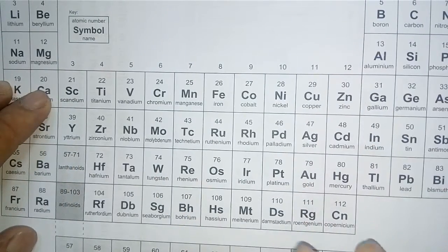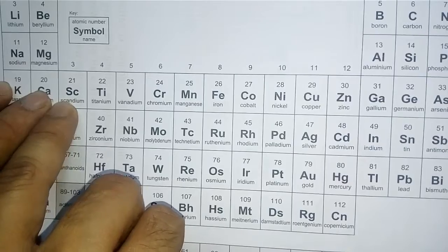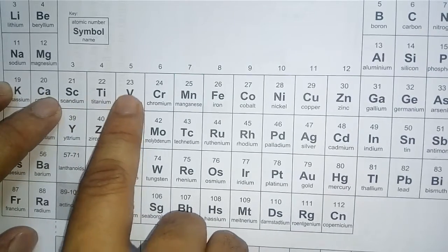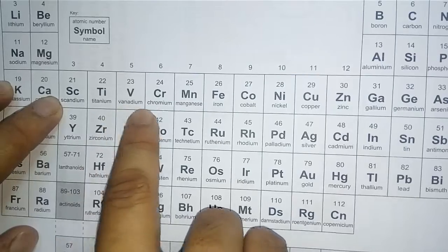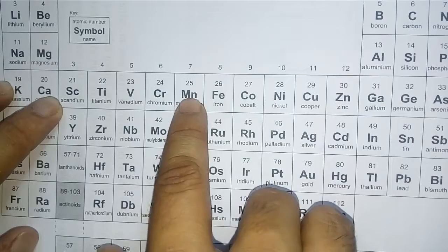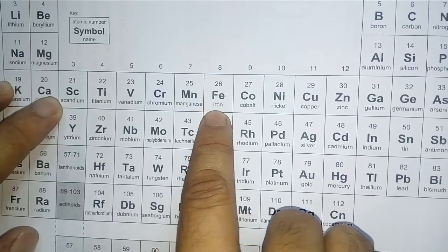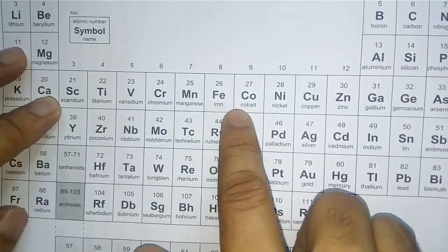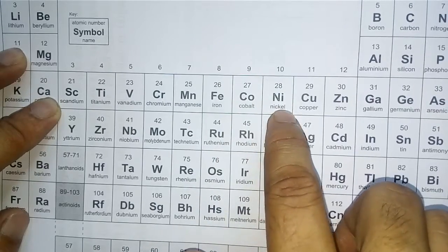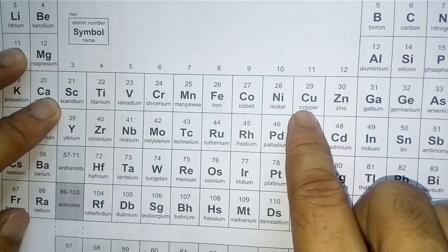This is the 3d series. Sun means scandium. Teri means titanium. Wale - this one is vanadium. Car means chromium. May - that means manganese. Fear - iron, fear means iron. Koi - this is cobalt. Nickel. Na means nickel. Koi - copper.